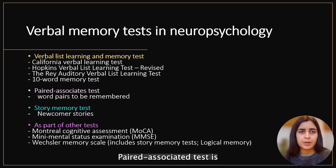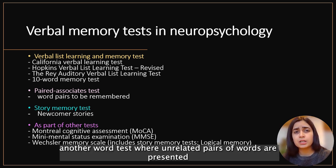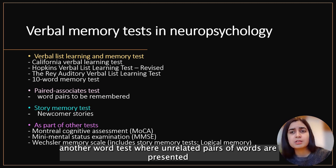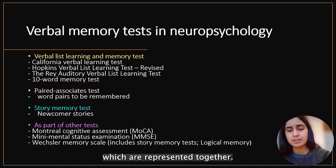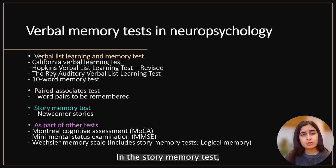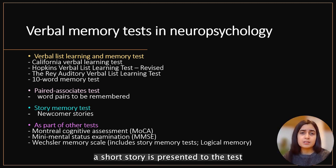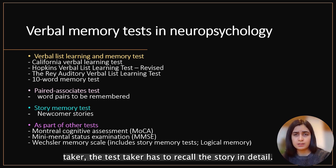The paired associate test is another word test where unrelated pairs of words are presented and the test taker is instructed to remember the words that were presented together. In the story memory test, a short story is presented to the test taker, who then has to recall the story in detail.